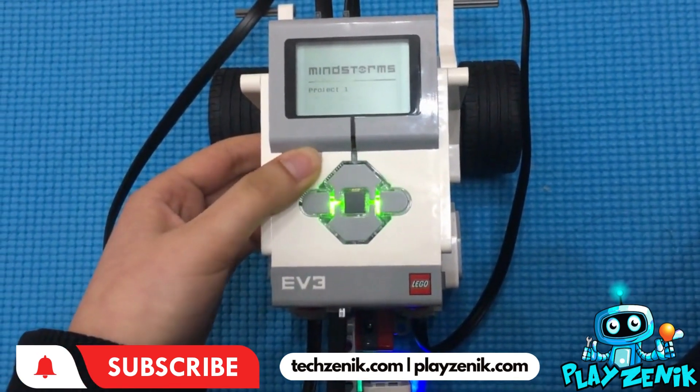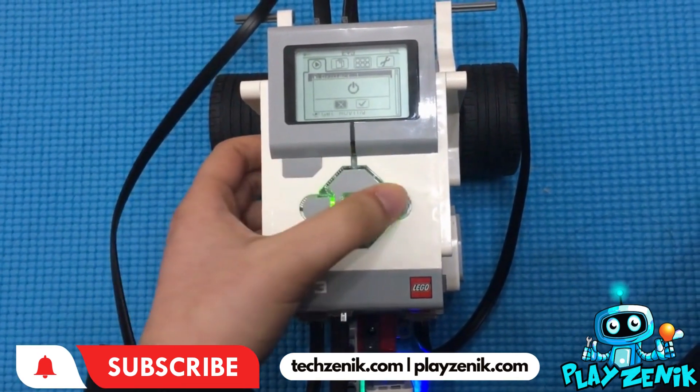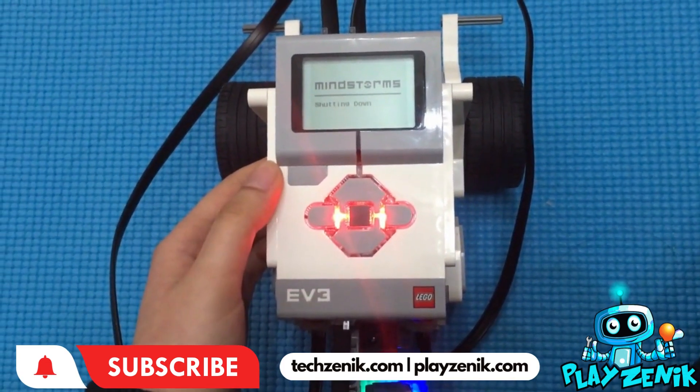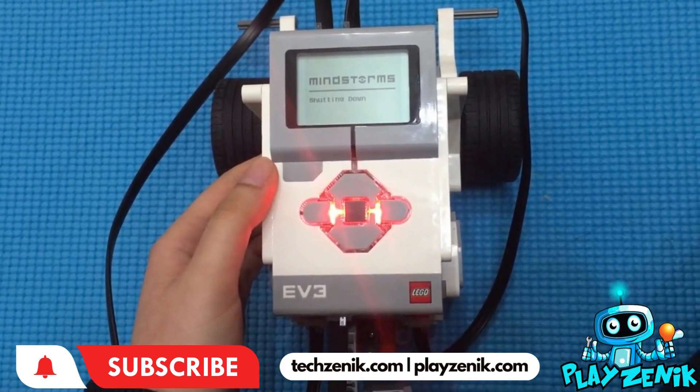In the next video we'll go over what each programming block means, but for now you can turn off your robot by pressing the back button and pressing the check mark when it asks you if you want to turn it off. Thank you!